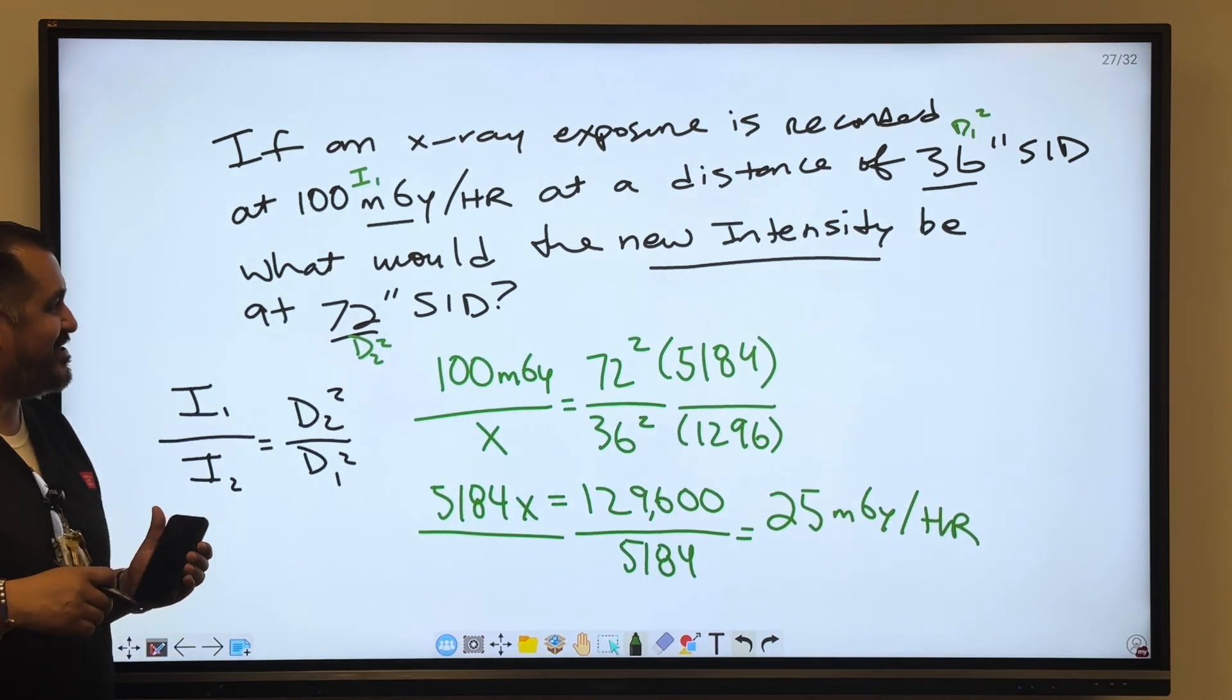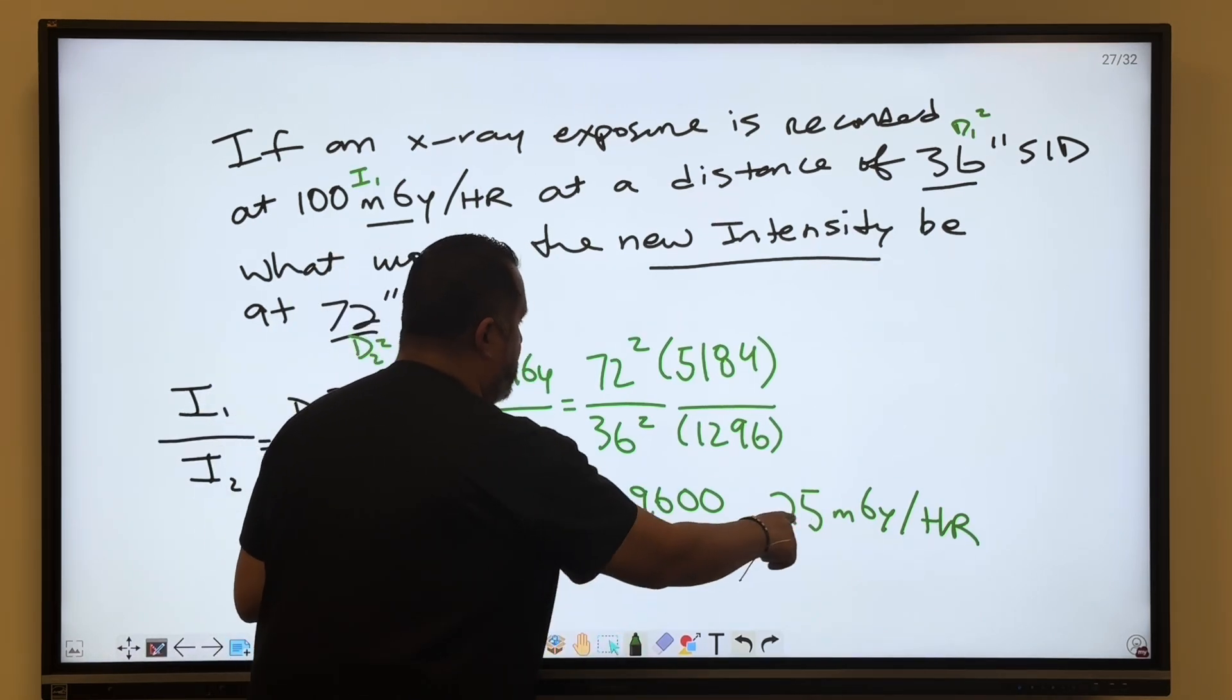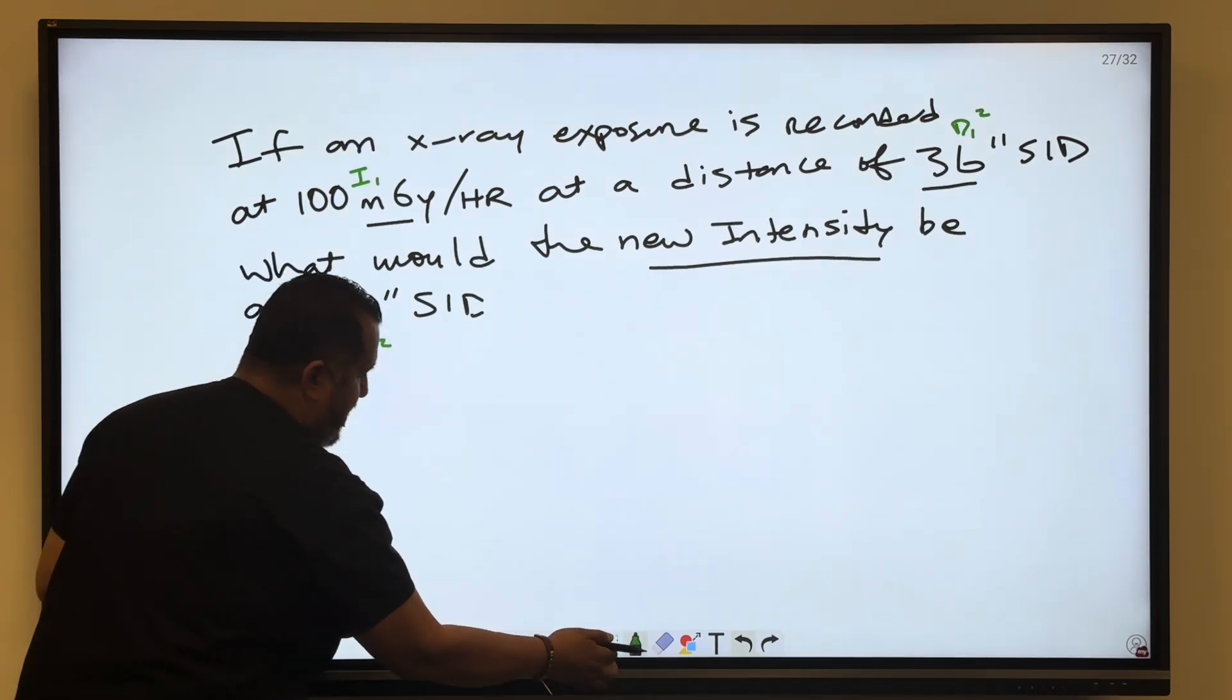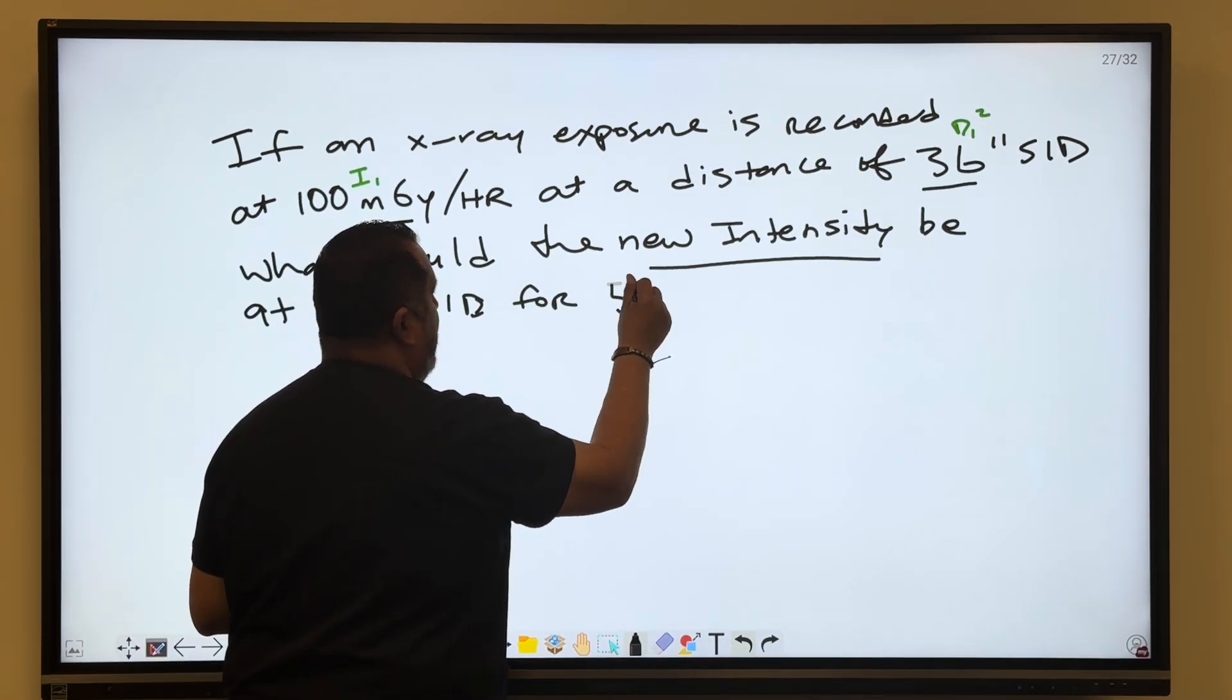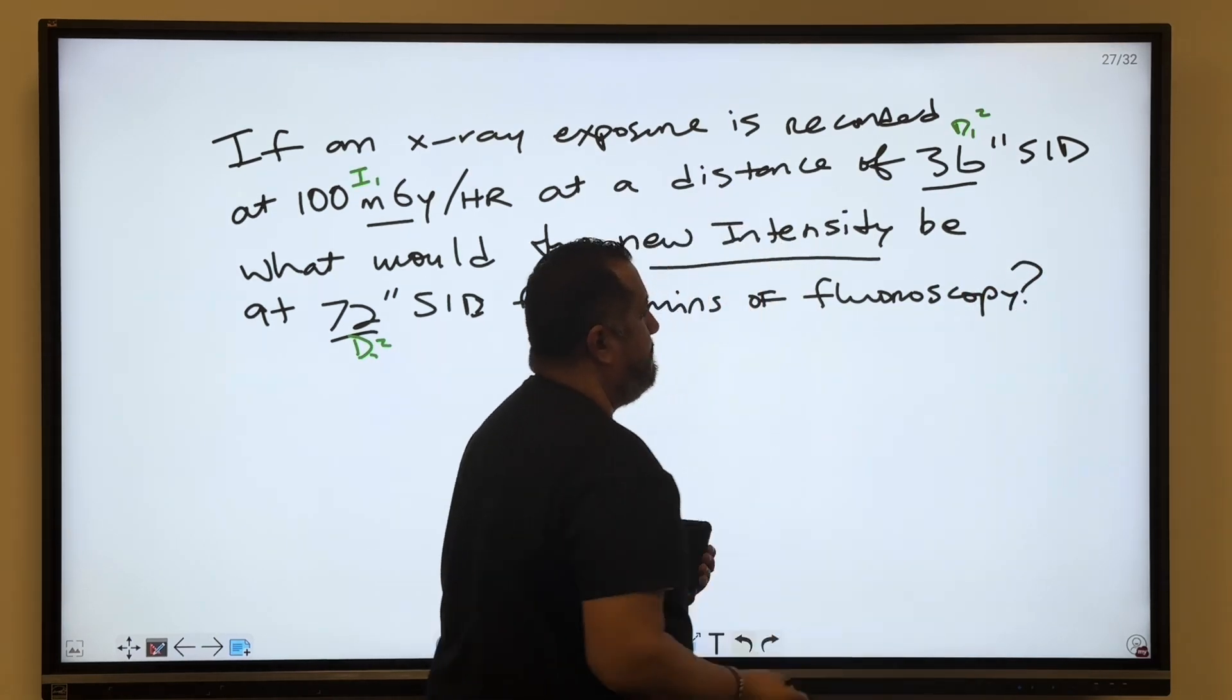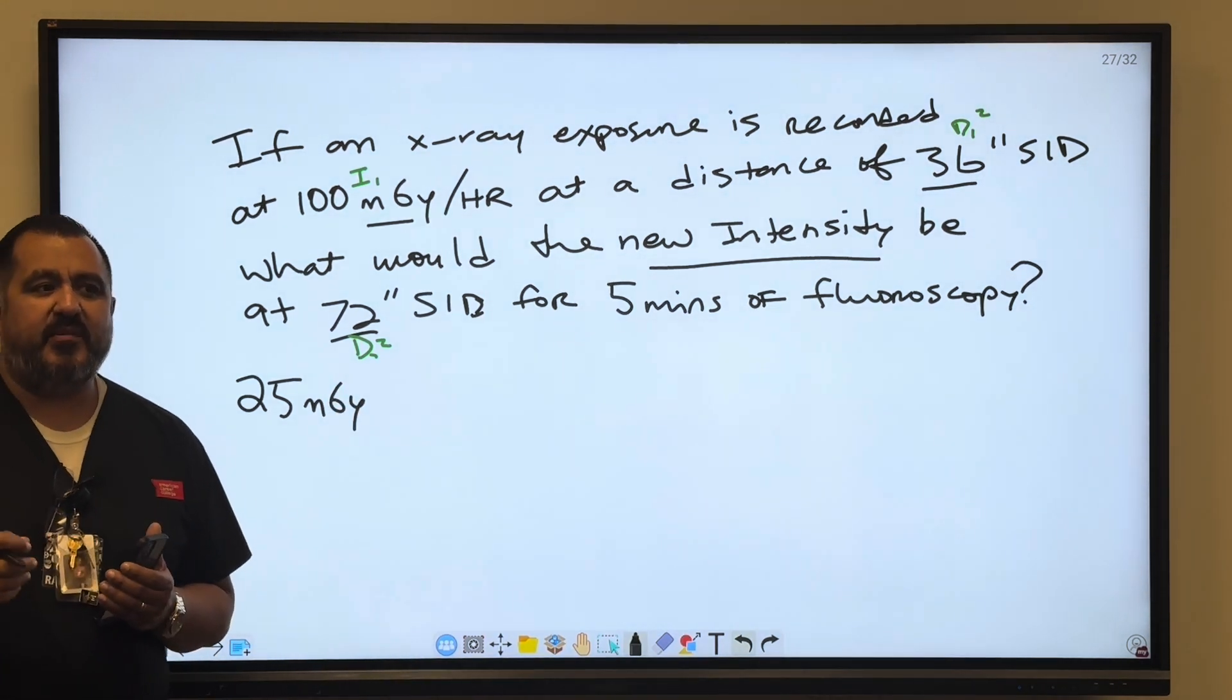We're going to kick it up a notch. What if they say now, we got 25 milligray for 5 minutes of fluoro. So it's at 5 minutes now, it's not for the hour. Remember, we got 25 milligray. So now we've got to figure out how much it is for 5 minutes.